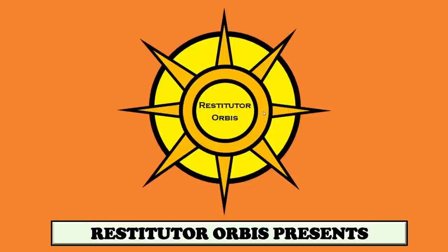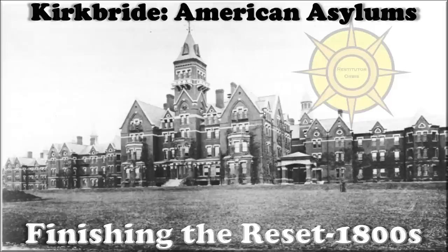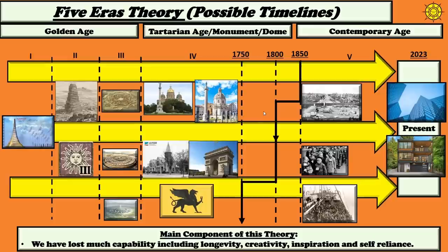Welcome to the Restitutor Orbis channel. Thank you for joining me today. We'll be exploring Kirkbride American Asylums, finishing the reset in the 1800s. In yesterday's video we looked at photos set during the 1850s and postulated a theory about the reset occurring around 1850. But how did they get that reset to continue? How did they make it successful?